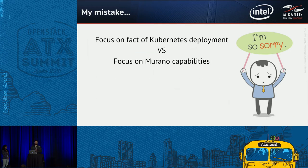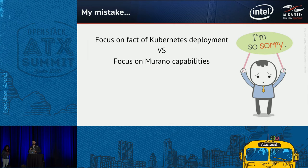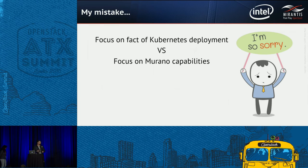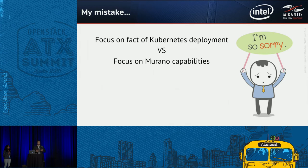I would like to apologize. At the Vancouver Summit, we talked a lot about how Murano deploys Kubernetes, how Kubernetes is cool, how Murano deploys highly available Kubernetes, and so on. But instead of that, we should have focused on the capabilities Murano provides to write such a complex application — complex enough that the OpenStack community created a specific project just to deploy Kubernetes. Instead of explaining Murano's automation capabilities, we focused on the fact that we can deploy it. That was the mistake that led to this talk.